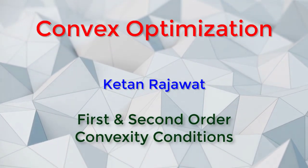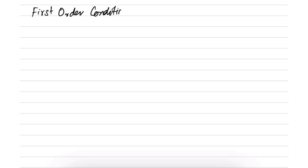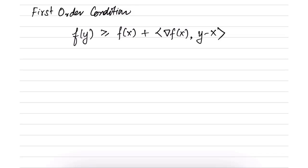It is also possible to specify the convexity of a function using its first or second order derivatives. The first order condition states that f(y) is greater than or equal to f(x) plus the gradient of f at x, inner product with y minus x. This is called the first order condition because we are using the gradient of f at x.